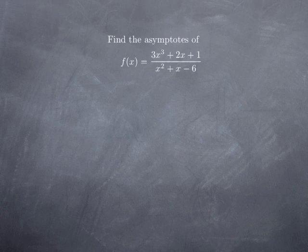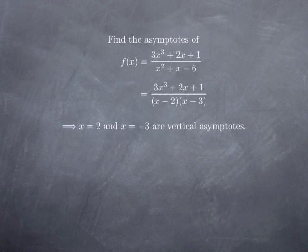Let's take a third example: f(x) = (3x³ + 2x + 1) / (x² + x - 6), starting with vertical asymptotes. These correspond to the zeros of the denominator: x = 2 and x = -3. Plugging x = 2 into the numerator gives 3(8) + 4 + 1 = 29, a non-zero value. At x = -3, the numerator gives 3(-27) - 6 + 1, also non-zero. In both cases we have a non-zero constant over zero, giving infinite limits, so both x = 2 and x = -3 are vertical asymptotes.